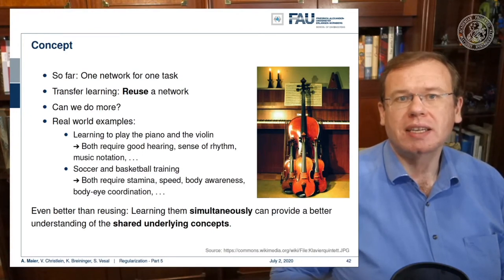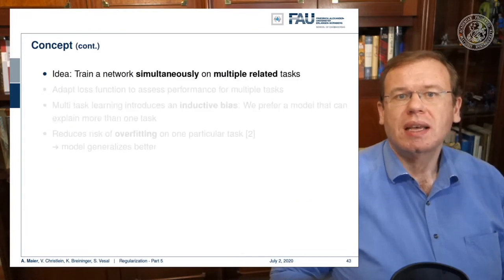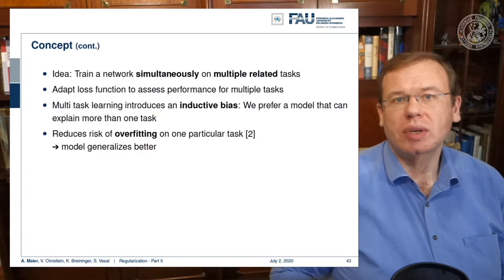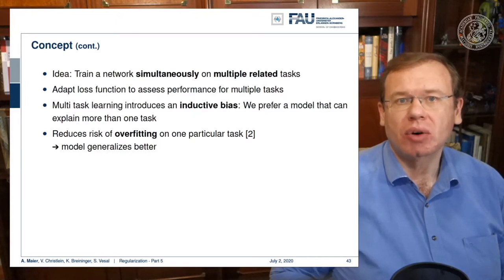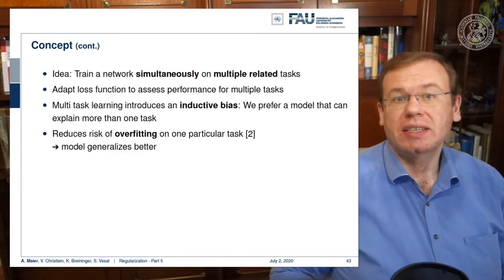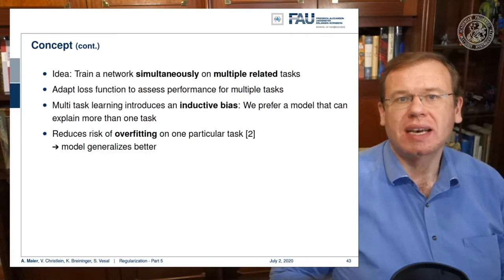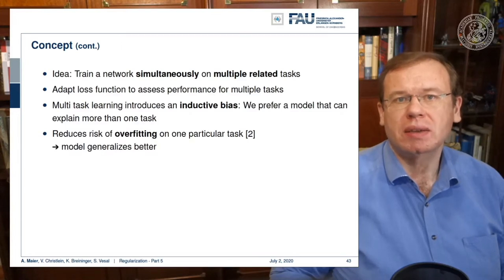This would be even better than reusing, as you learn simultaneously and gain a better understanding of the shared underlying concepts. The idea is that we train our network simultaneously on multiple related tasks. We adapt the loss function to assess performance for multiple tasks, which introduces a so-called inductive bias. As a result, we prefer a model that can explain more than a single task, reducing the risk of overfitting and improving generalization.